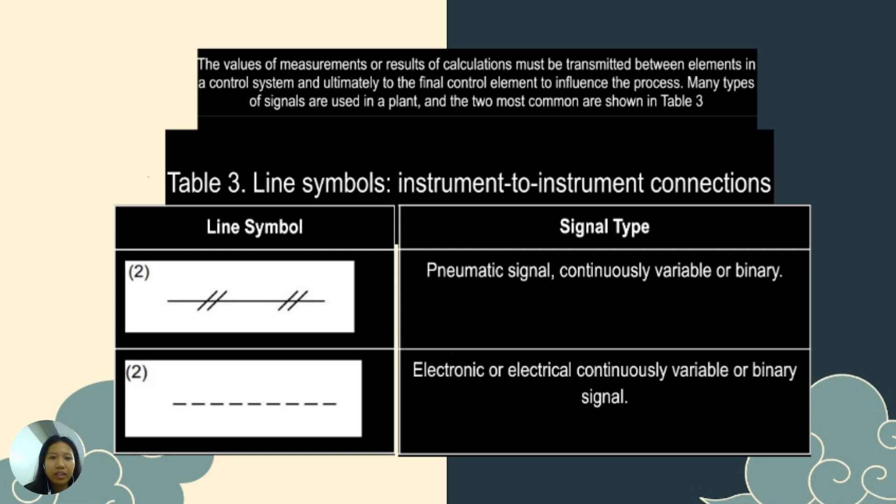For the third topic, the line symbols instrument to instrument connections. The first picture for the line symbol is for the pneumatic signal continuously variable or binary. And for the second picture, it is the line symbol for the electronic or electrical continuously variable or binary signal.